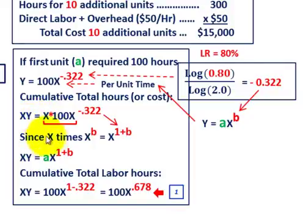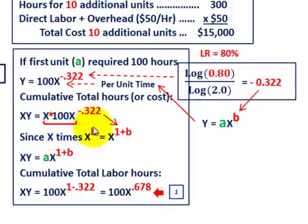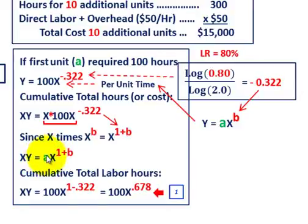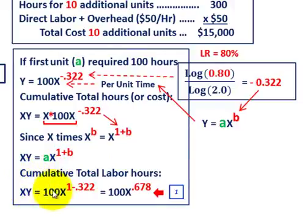Since X times X raised to the power of B equals X raised to the power of 1 plus B, we combine the exponents. So our cumulative total labor hours, X times Y, equals A times X raised to the power of 1 plus B. Based on our 80% learning rate, that becomes 100 times X raised to the power of 1 minus 0.322, which equals 100 times X to the 0.678.